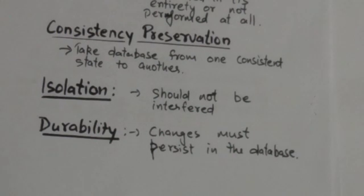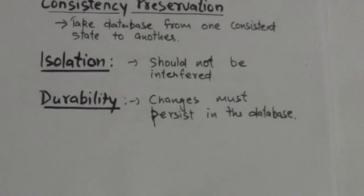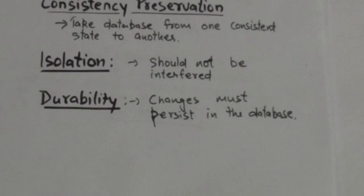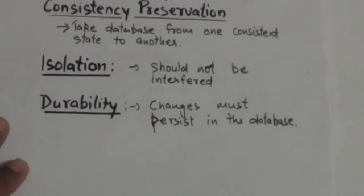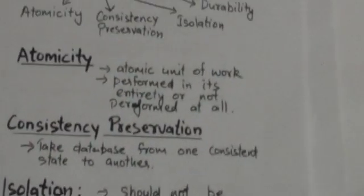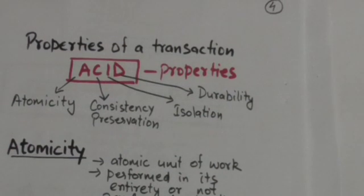Durability means the changes applied to the database by a committed transaction must persist in the database. These four properties — Atomicity, Consistency, Isolation, and Durability — are called the ACID properties of a transaction.